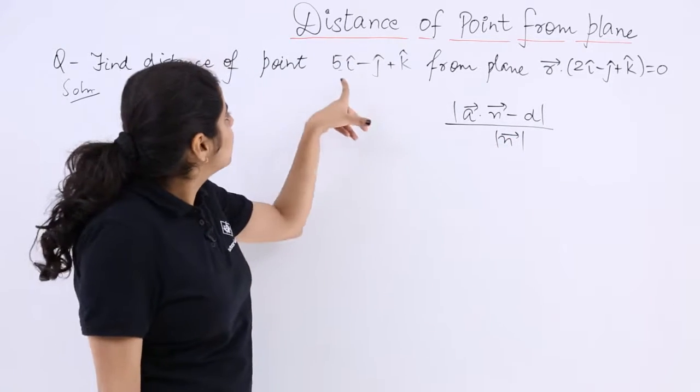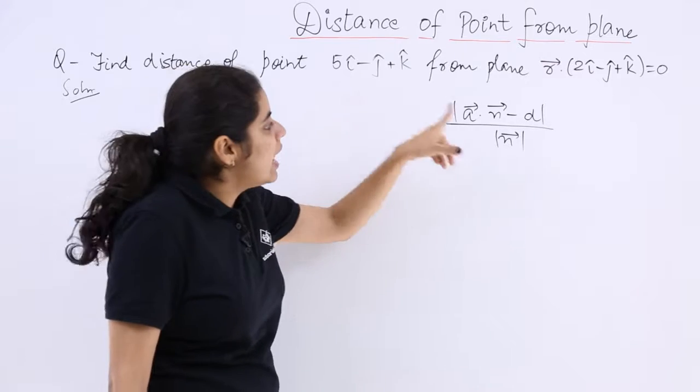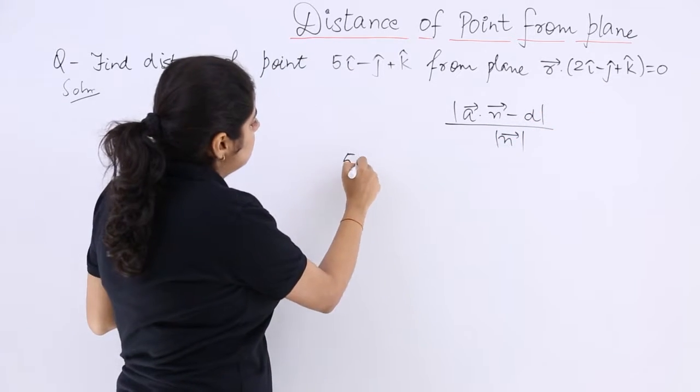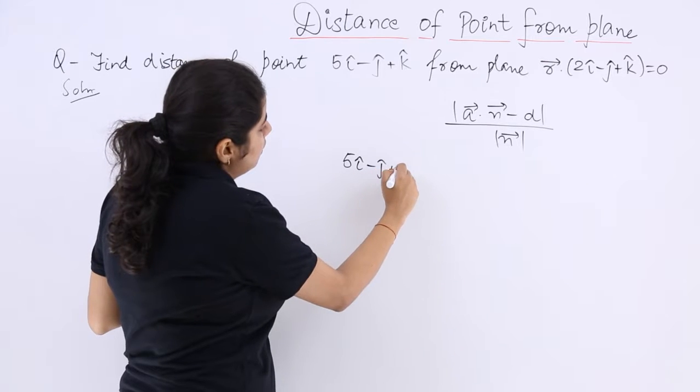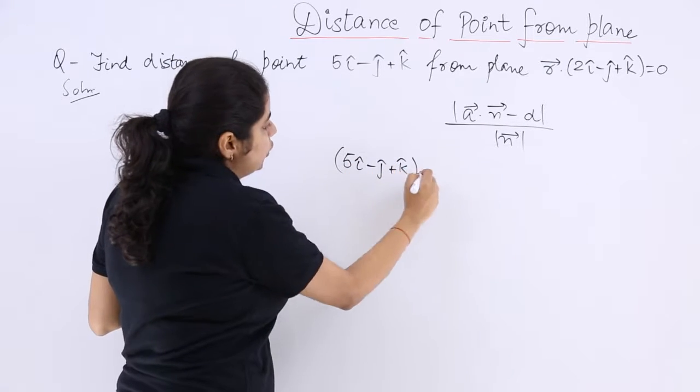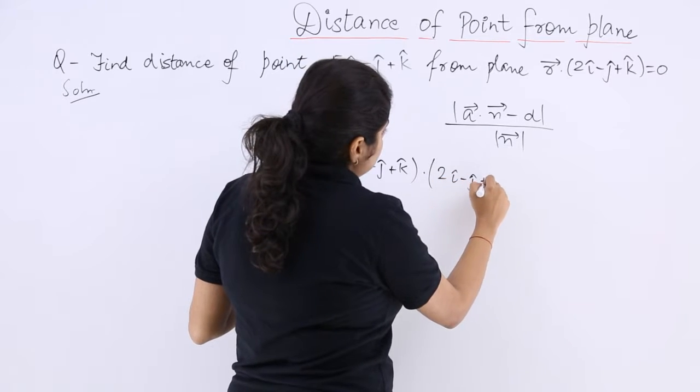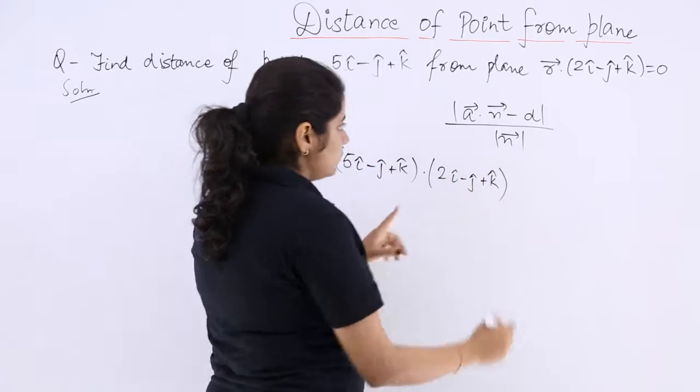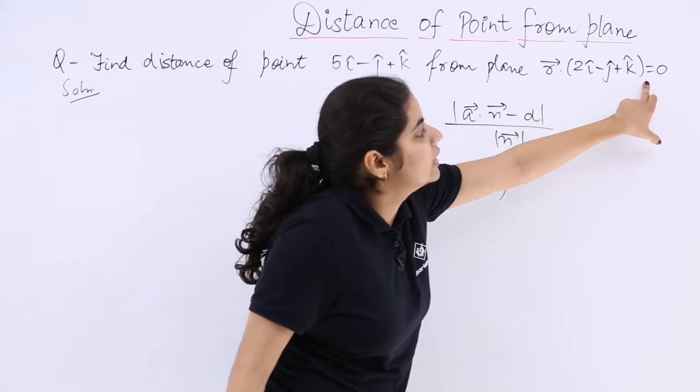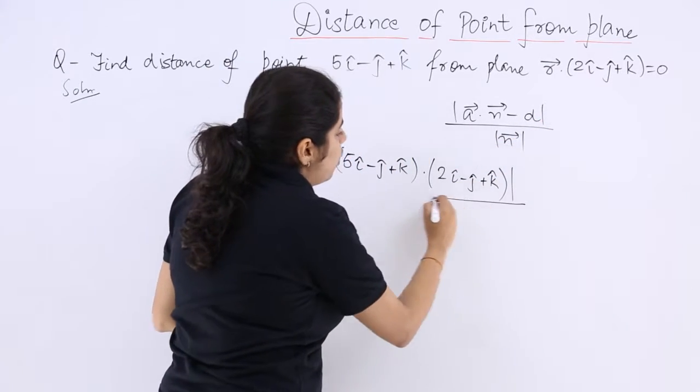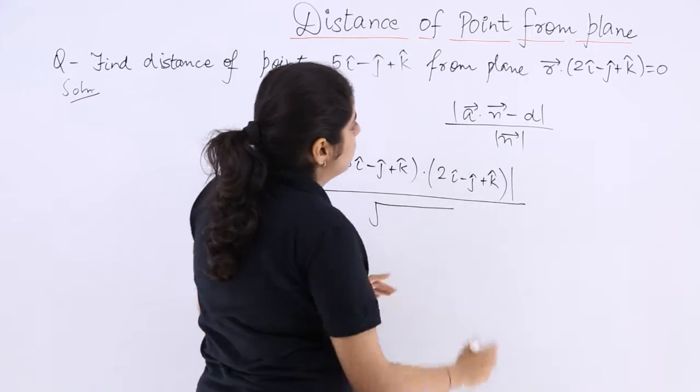Now what is a vector? This is the point. And what is n vector? From here we get a vector dot product with the n vector minus d. Here there is nothing called as minus d, so let's just remove this, whole over modulus of n vector.